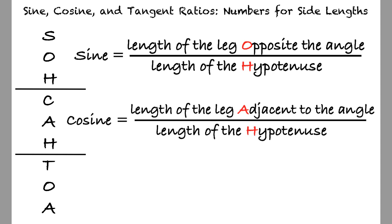Cosine is the length of the leg adjacent to the angle over the length of the hypotenuse.